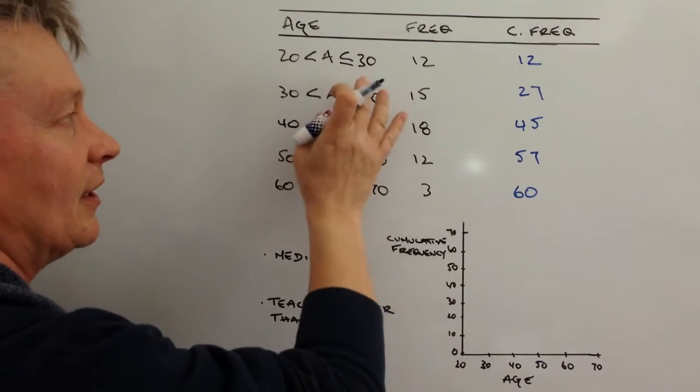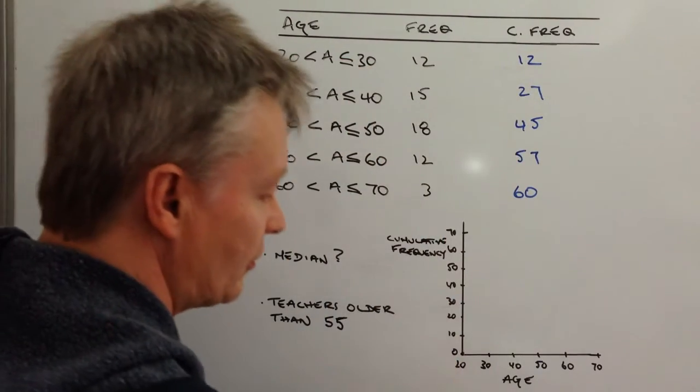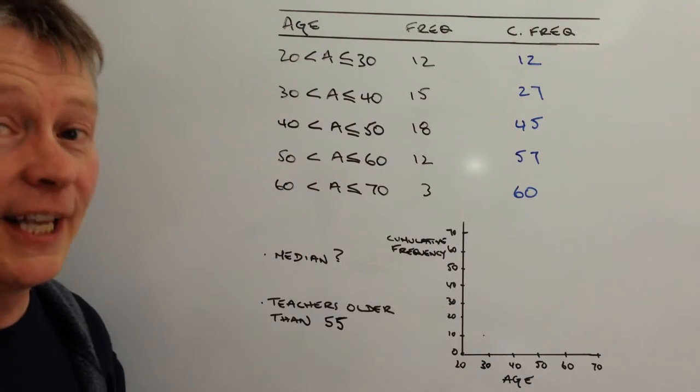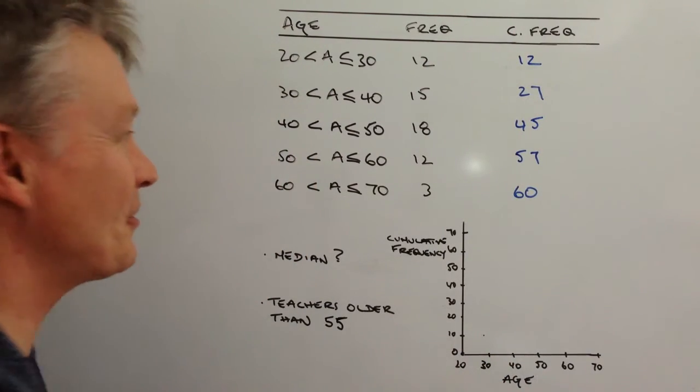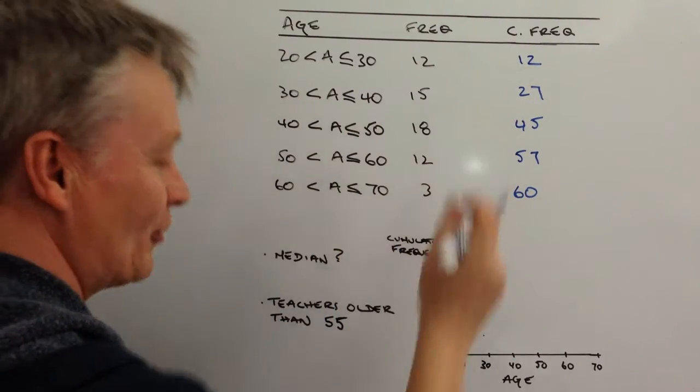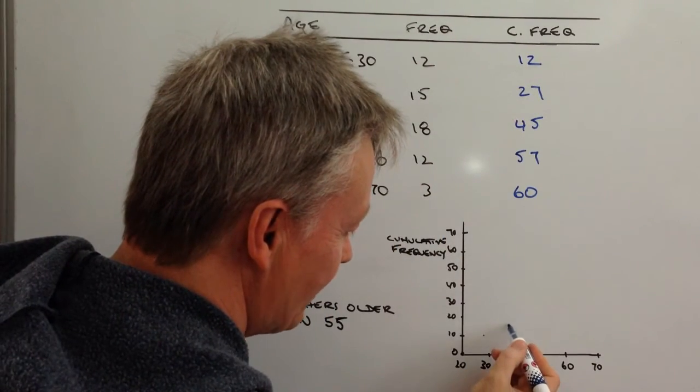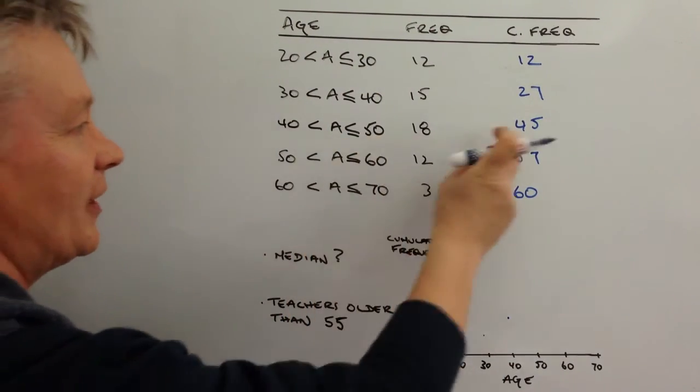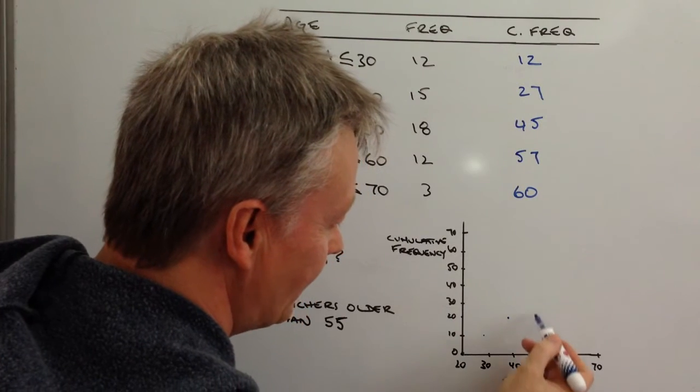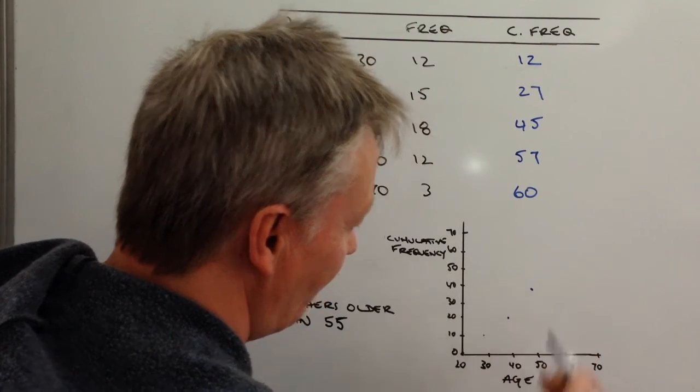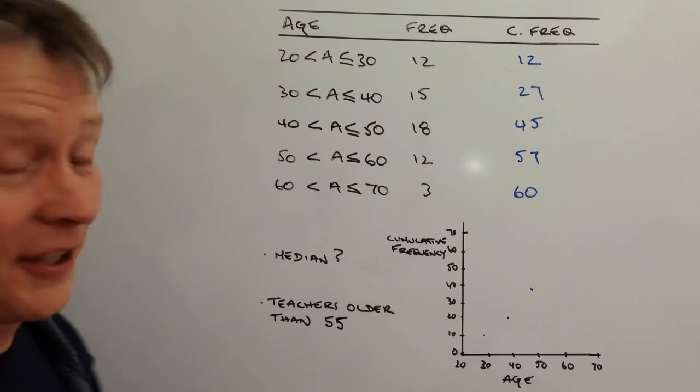So 30 to 12 is going to be there. You're going to have to forgive me a little bit with this particular diagram—it's quite difficult to do on the screen—but I will do my best. 40 to 27 is going to be about there, and we've got 50 to 45, so 50 to 45 is going to be very roughly about there.